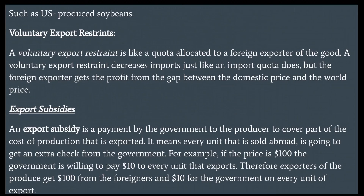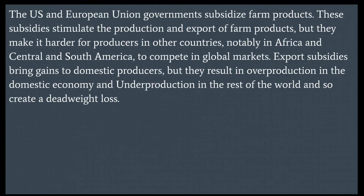Export subsidies. An export subsidy is a payment by the government to a producer to cover part of the cost of production that is exported — every unit sold abroad receives an extra payment from the government. For example, if the price is $100, the government pays $10 for every unit exported, so exporters receive $100 from foreigners and $10 from the government on every unit. The U.S. and European Union governments subsidize farm products, stimulating production and export but making it harder for producers in Africa and Central and South America to compete in global markets. Export subsidies bring gains to domestic producers but result in overproduction domestically and underproduction in the rest of the world, creating a deadweight loss.